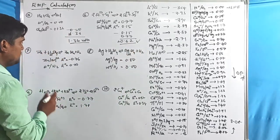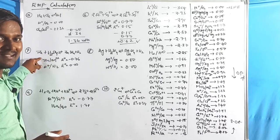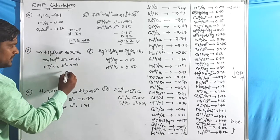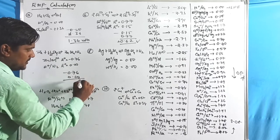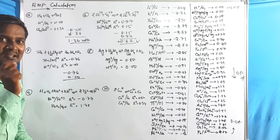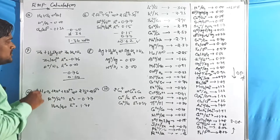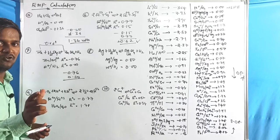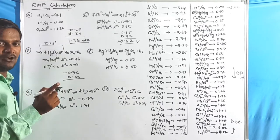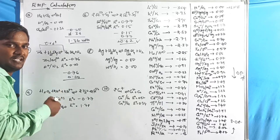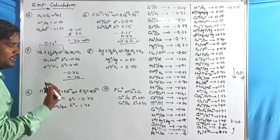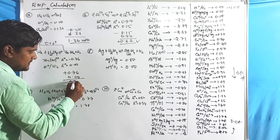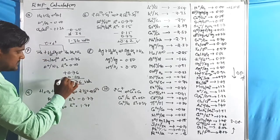For zinc displacing hydrogen from dilute acid: values are −0.76 (Zn²⁺/Zn) and 0.00 (H⁺/H₂). Zinc converts to Zn²⁺ — it is oxidized — so change the sign of the zinc electrode. Oxidation potential of Zn = +0.76. Adding: 0.76 + 0.00 = 0.76 volts (positive).